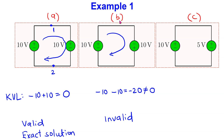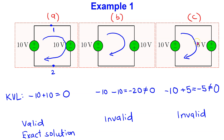For interconnection B, applying KVL, we can see that KVL is not satisfied. Thus, we can immediately conclude that interconnection B is invalid. Similarly, for interconnection C, applying Kirchhoff's voltage law, we can see that the algebraic sum of voltages around the closed loop is minus five and is not equal to zero. Thus, we can immediately conclude that interconnection C is also invalid.